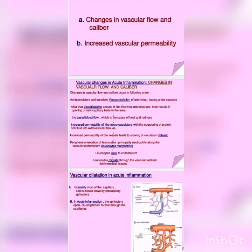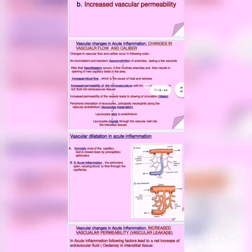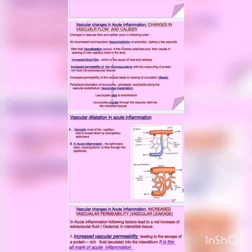Then, increased permeability of vessels leads to slowing of circulation — stasis. There is peripheral orientation of leukocytes, principally neutrophils, along the vascular endothelium — leukocyte margination. Leukocytes stick to the endothelium, and at the end leukocytes migrate through the vascular wall into the interstitial tissues. Normally, most of the capillary bed is closed down by pre-capillary sphincters, but in acute inflammation the sphincters open causing blood to flow through the capillaries.